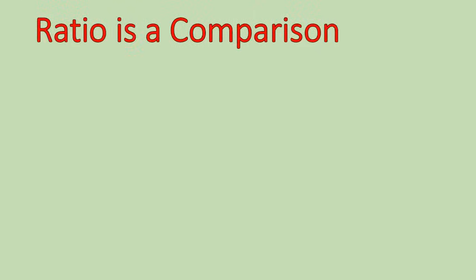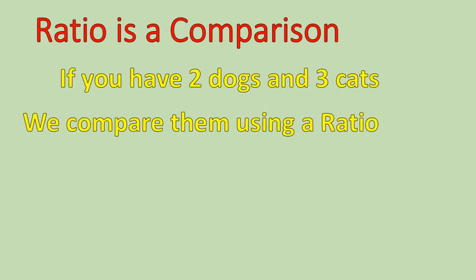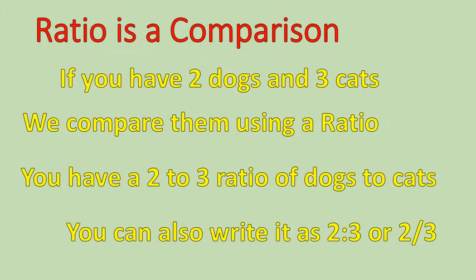Let's talk for a brief minute about what a ratio is. A ratio is a comparison. If you have two dogs and three cats, you would compare them using a ratio. And that ratio would be, you have a two to three ratio of dogs to cats. So, two dogs, three cats. You have two dogs for every three cats. That's how you write a ratio. Again, remember, we can write them in colon form or fraction form, but that's what a ratio is.